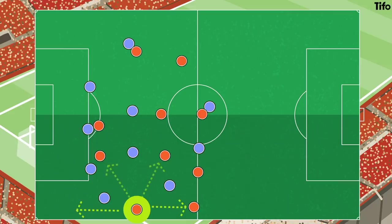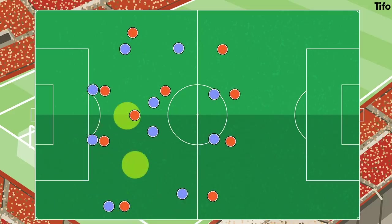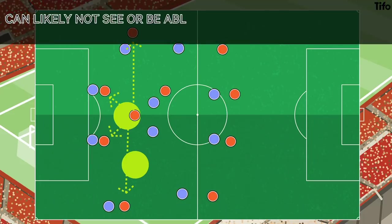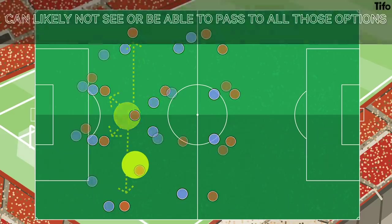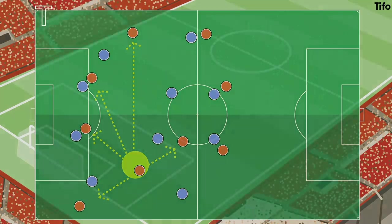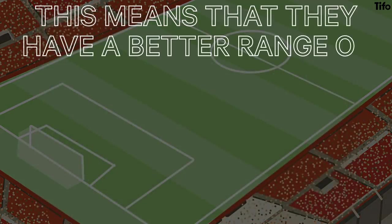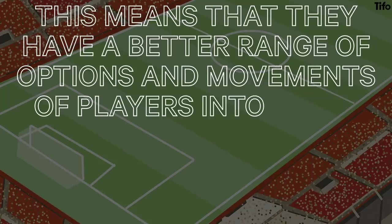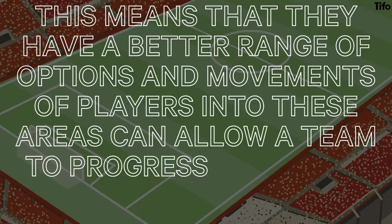A player out wide can only pass forwards, backwards or infield, and it's easy to prevent at least two of these options. A player who is central has more options, but because of their field of vision and the congested nature of the pitch's centre, can likely not see or be able to pass the ball to all of those options. But a player in the half-space can orientate their body towards goal, but still have a wide array of passing options and be able to see wide players ahead of them and any player infield from them in the central areas. This means that they have a better range of options, and movements of players into these areas can allow a team to progress and attack more dynamically.